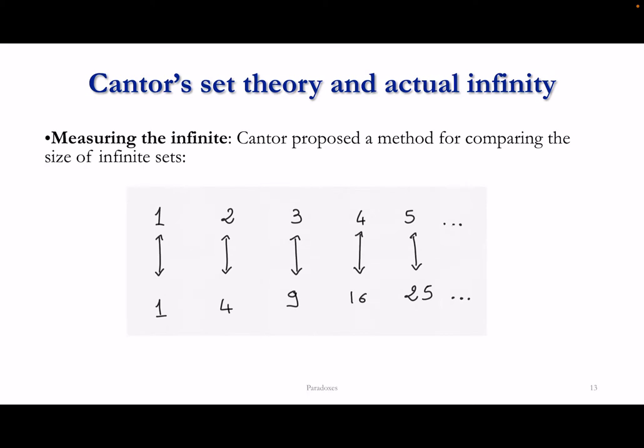To give a quick idea of Cantor's way of looking at infinity: in order to talk of different kinds of infinity, we need to be able to measure the infinite. We saw in the previous video what goes under the name of Galileo's paradox. This paradox arises because we compare the whole numbers — 1, 2, 3, 4, 5, and so on — with the so-called square numbers: numbers which are the square of a whole number, such as 1, 4, 9, 16, 25, and so on.